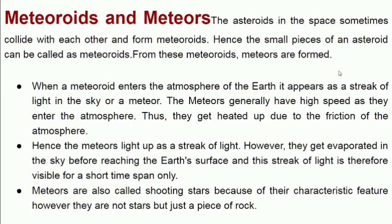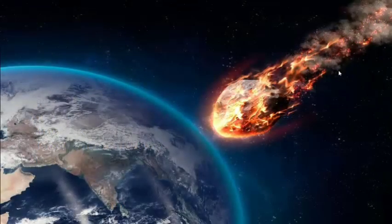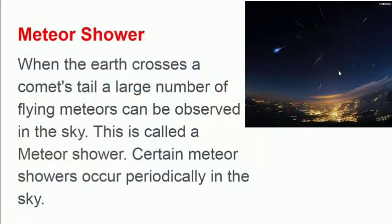When that rock is not on the earth's surface, we call it a meteorite. But as it comes to our earth's surface, we still call it a meteorite. The meteor lights up as a streak of light; however, it generally evaporates in the sky before reaching the earth's surface, so the streak of light is visible for only a short span of time. A large number of meteors observed together in the sky is called a meteor shower. Certain meteor showers occur periodically.